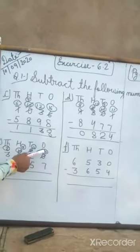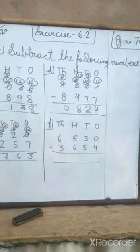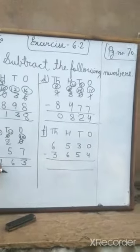10 minus 7 is 3. 11 minus 5 is 6. 9 minus 2 is 7. And 2 minus 1 is 1. The answer is 1763.